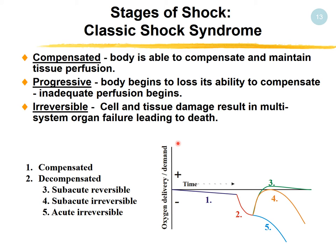This is what happens in shock. First, we have an initiation phase that can be maintained for a long time. But after a while, there is no turning back — it becomes irreversible. The stages of classic shock: first, a compensated phase where the body maintains tissue perfusion. Then a progressive phase where the body begins to lose its ability to compensate. Finally, an irreversible phase where cell and tissue damage occur, resulting in multi-system organ failure and death.